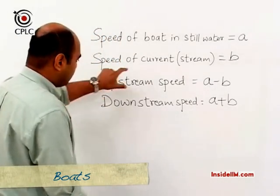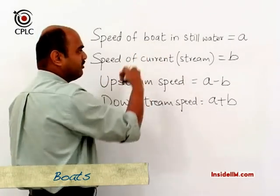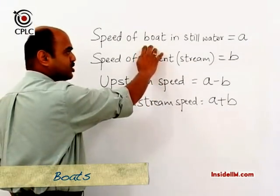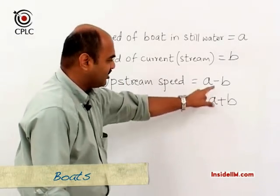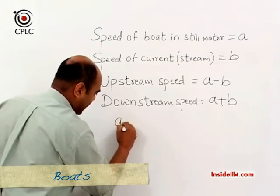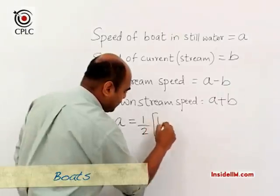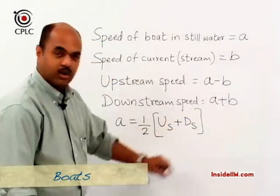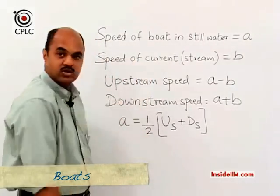There are certain questions where the upstream speed and the downstream speed are given, and we need to find the speed of the boat in still water or the speed of the current. If we add the two — upstream (A minus B) and downstream (A plus B) — B cancels and we get 2A. Hence, the speed of the boat in still water A equals half of the sum of upstream and downstream speeds.